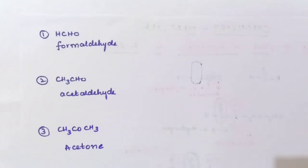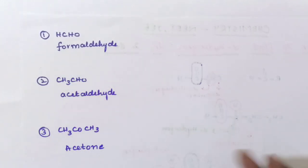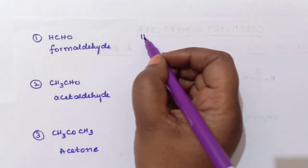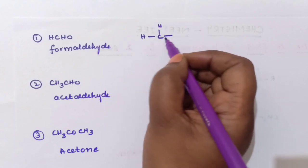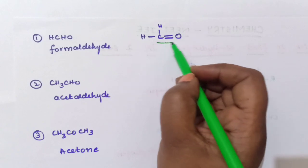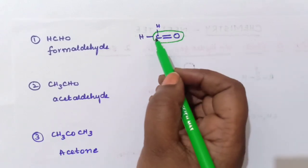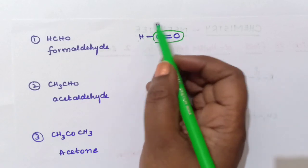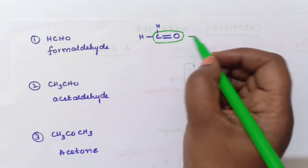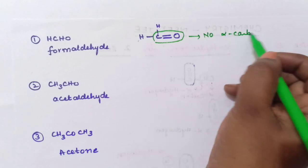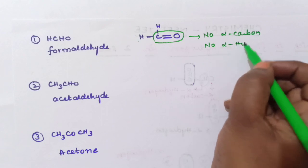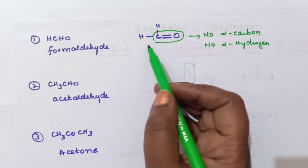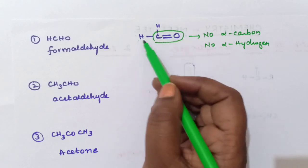See here, let us try to solve this example. Formaldehyde is HCHO. First write this structure out. This is the carbonyl carbon. Now, is any alpha carbon present? Next to the carbonyl carbon there should be an alpha carbon, but there is no alpha carbon here. If there is no alpha carbon, then there is no alpha hydrogen. So the number of alpha hydrogen atoms in formaldehyde is 0.